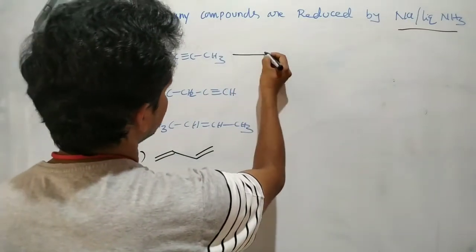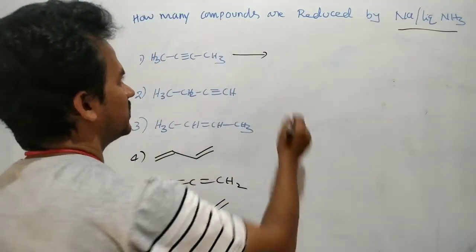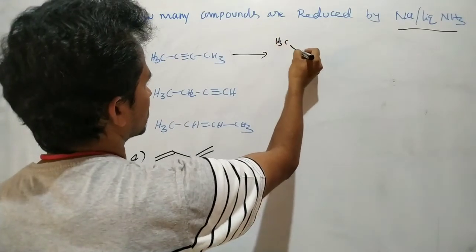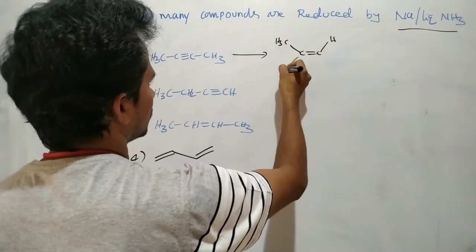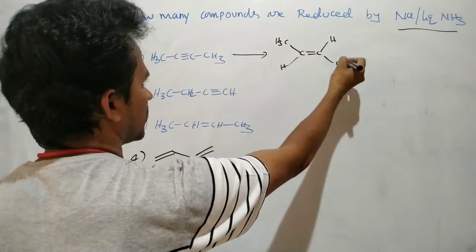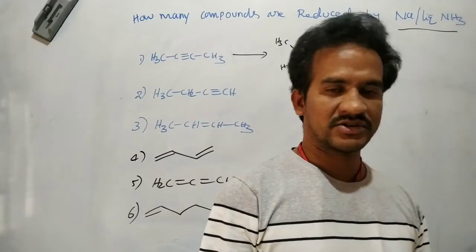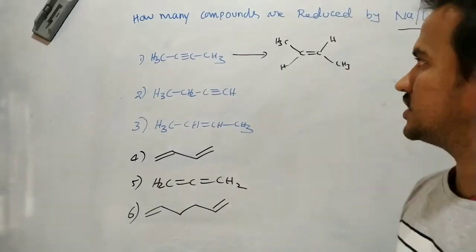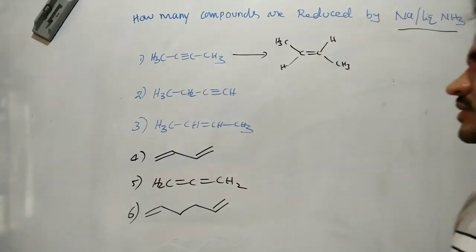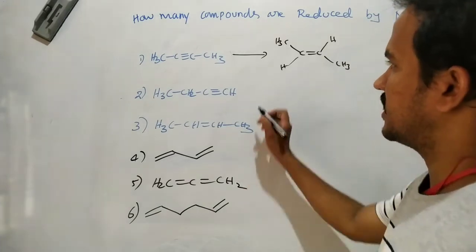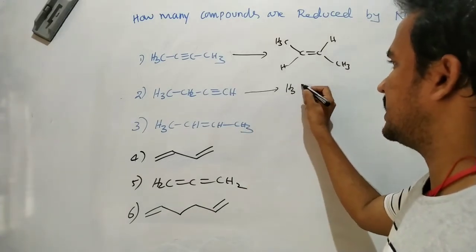2-butyne, by reacting with sodium in liquid ammonia, is converted to trans-2-butene. You know this reaction and the mechanism — by electron transfer, it is reduced to trans-2-butene.